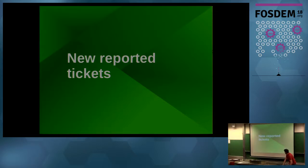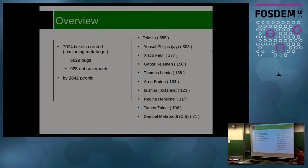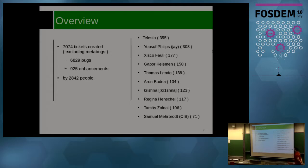First I'm going to talk about the new reported tickets. We have two categories: on one hand we have bugs, and on the other we have enhancements. During this year, a little more than 7,000 tickets were reported in Bugzilla. From those, almost 1,000 were enhancements and the rest were bugs. This was done by 2,800 people. Here you have the top 10 reporters — Telesto is first with 355 reports.